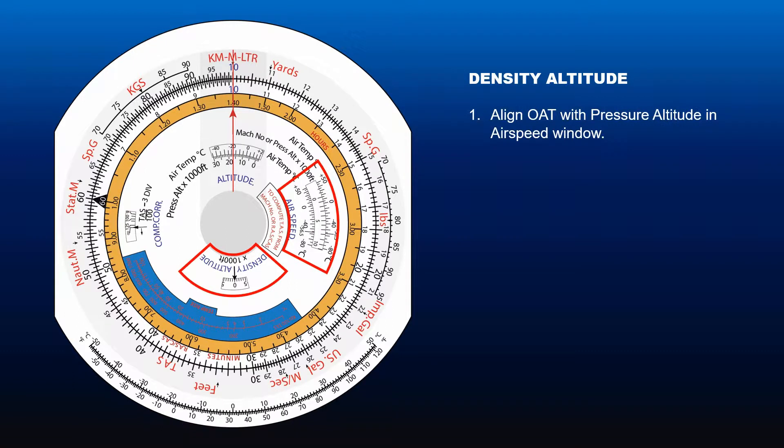First, align the outside air temperature with the pressure altitude in the airspeed window. Next, read off the value of density altitude in density altitude window.